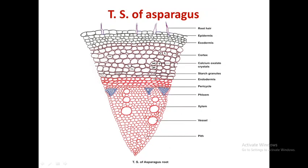Next is the pericycle, which contains alternating strands of xylem and phloem. The phloem is non-lignified and appears like a bunch of grapes — you can see this characteristic arrangement clearly in the section.